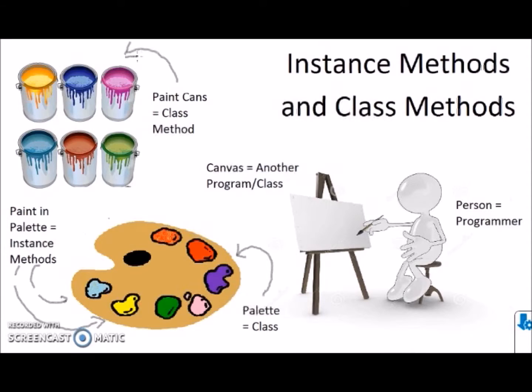Here we have an artist who we will call the programmer. Let's say the artist wants to paint a painting, which will represent a new program with another class. The artist can choose to use paint from the can or paint from the palette. In other words, the paint in the can and the paint in the palette are both paint, like how instance methods and class methods are both methods.